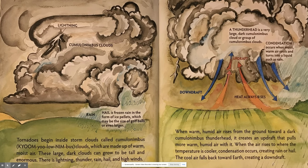There is lightning, thunder, rain, hail, and high winds. A thunderhead is a very large dark cumulonimbus cloud or group of cumulonimbus clouds.